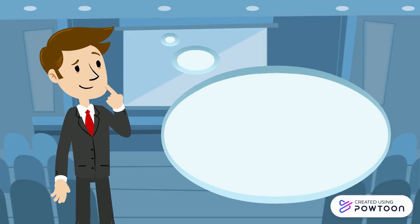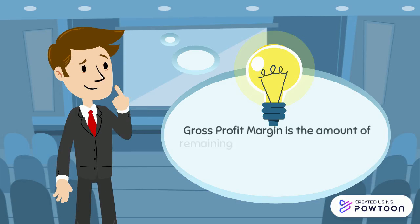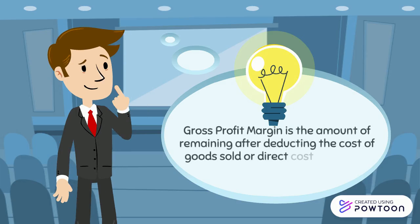What is gross profit margin? Gross profit margin is the amount remaining after deducting the cost of goods sold, or direct cost of earning revenue, from revenue.